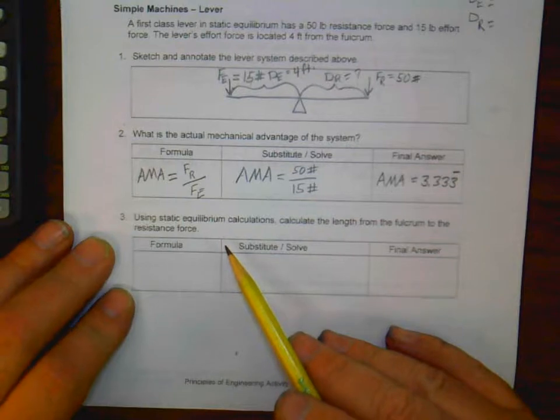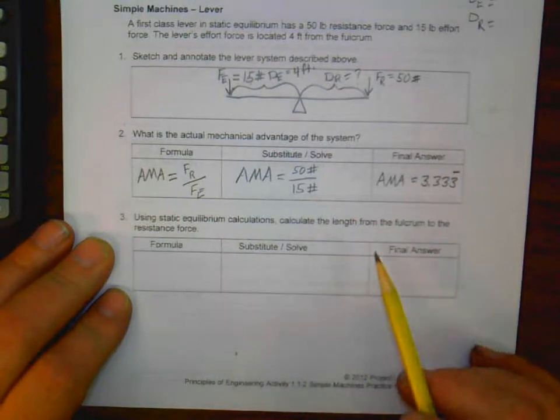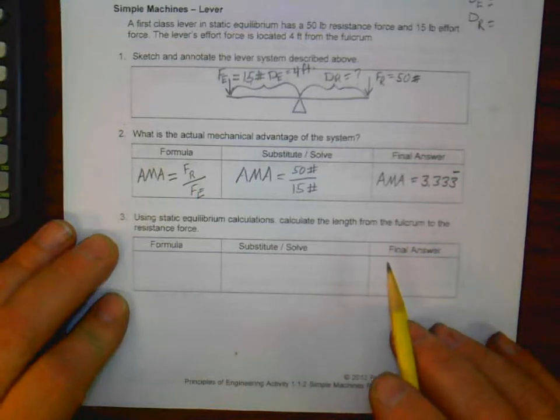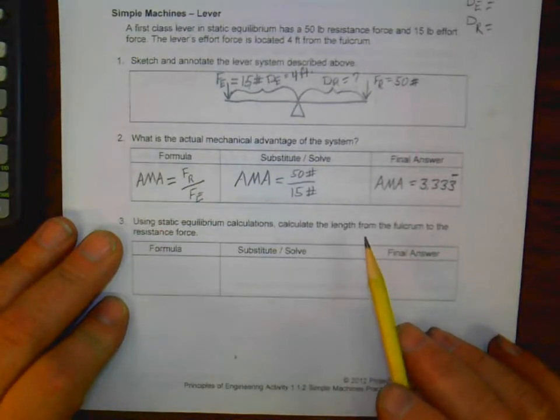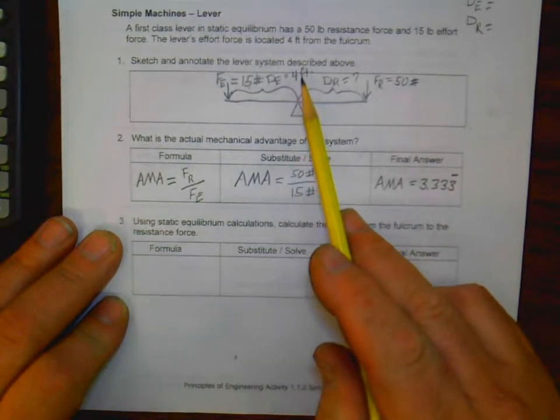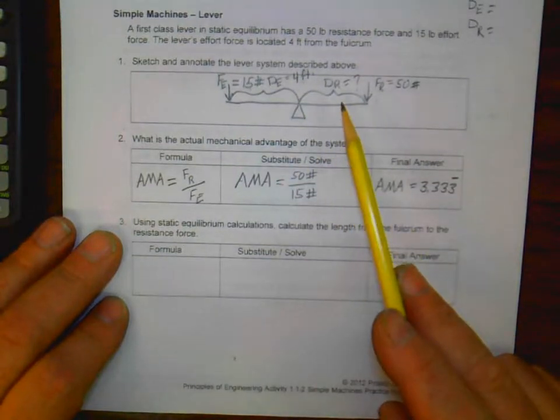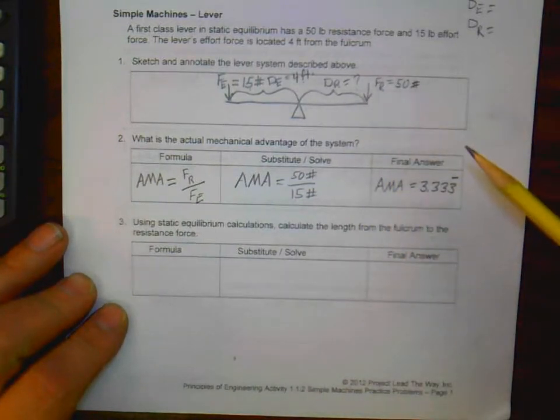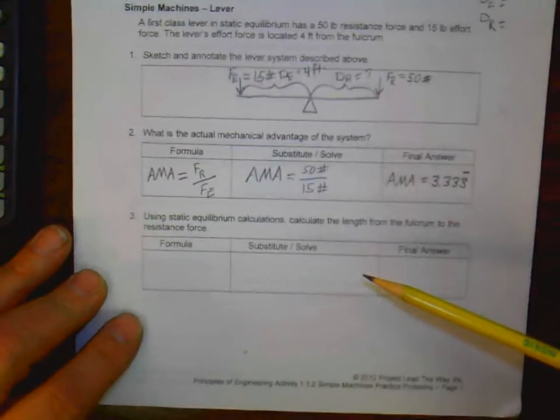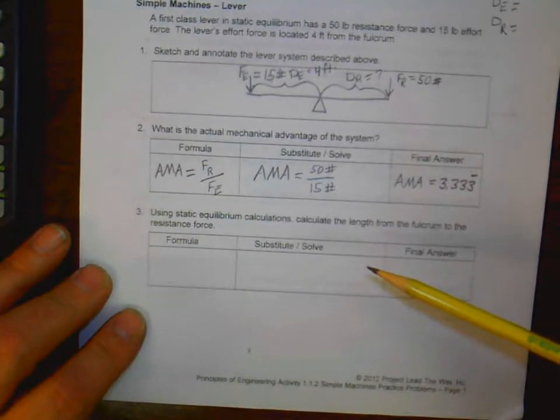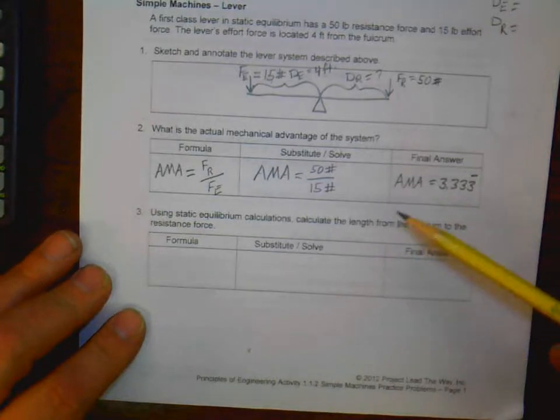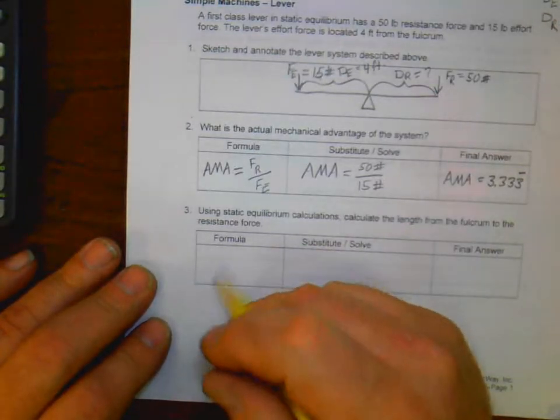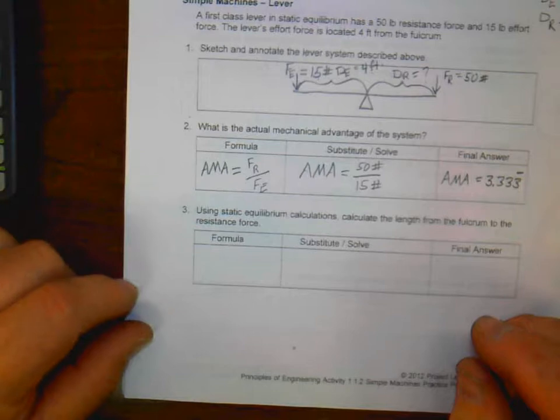So how do we do that? So we know the effort force length is four feet, and they want us to calculate out the distance to the resistance force, using static equilibrium. What does static equilibrium mean? Well, basically, we're going to take those two concepts, ideal mechanical advantage and actual mechanical advantage. If we have static equilibrium, that means that they are the same. So our ideal mechanical advantage is the same as the actual mechanical advantage.